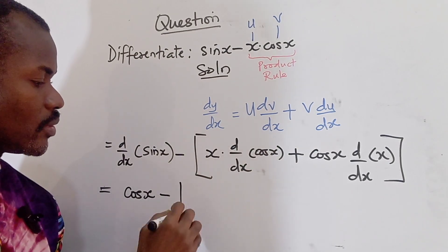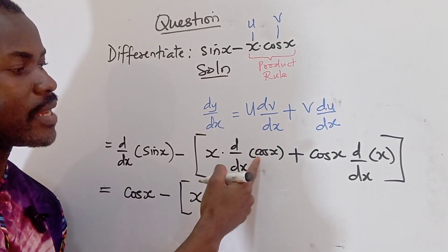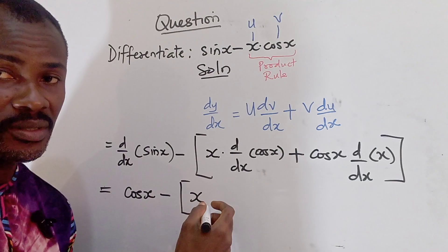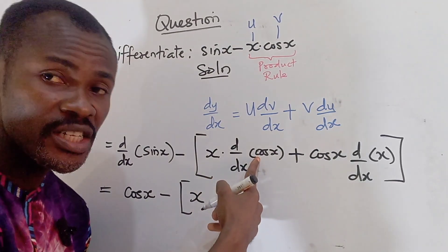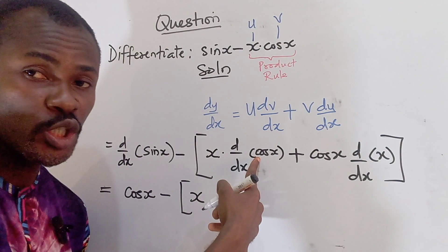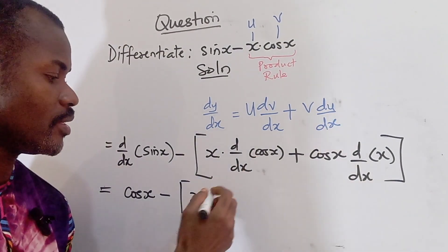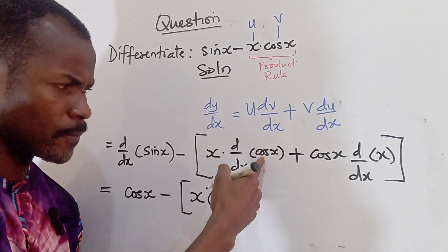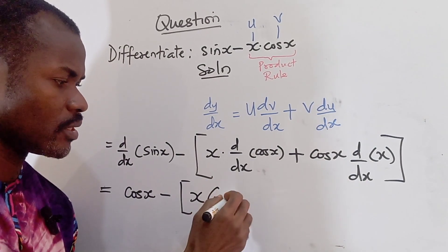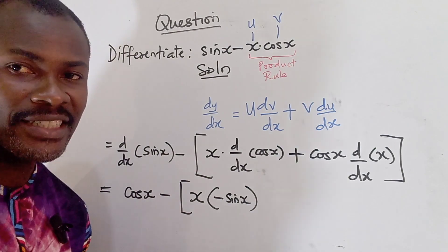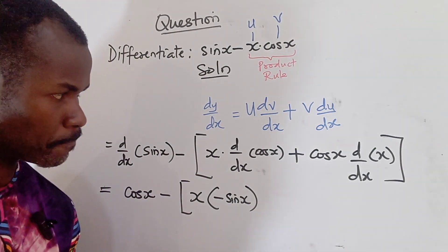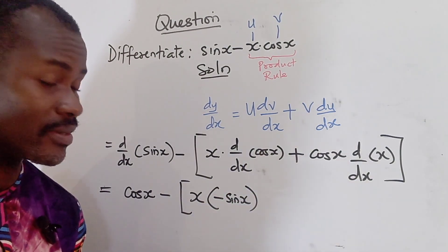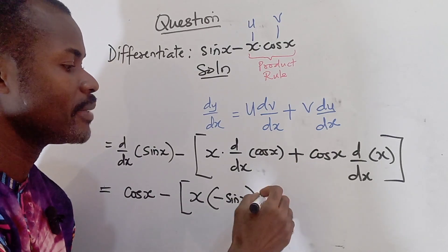So minus. Now we have x multiplied by, differentiating cos x is going to give us minus sine x. Whenever you differentiate your trigonometric function with c at the beginning, you always put your answer with minus. Very important. So cos becomes sine x. By the standard derivative you have that this gives us minus sine x. So we have plus.